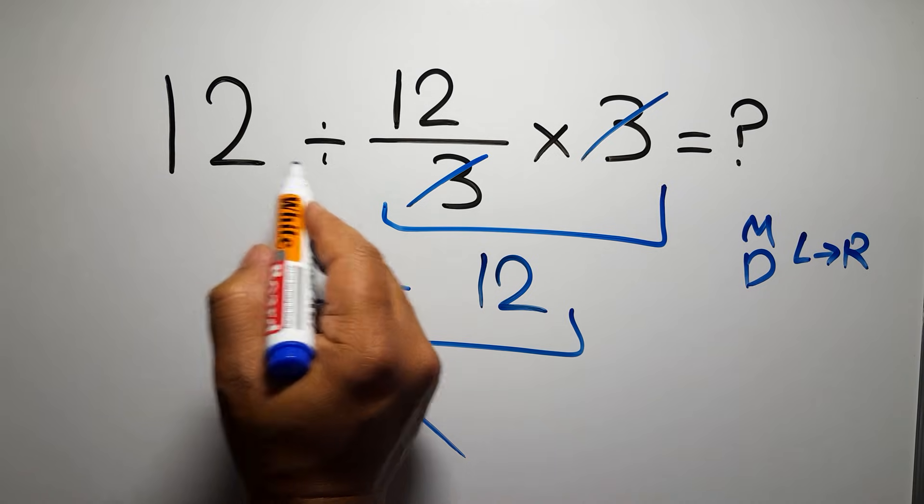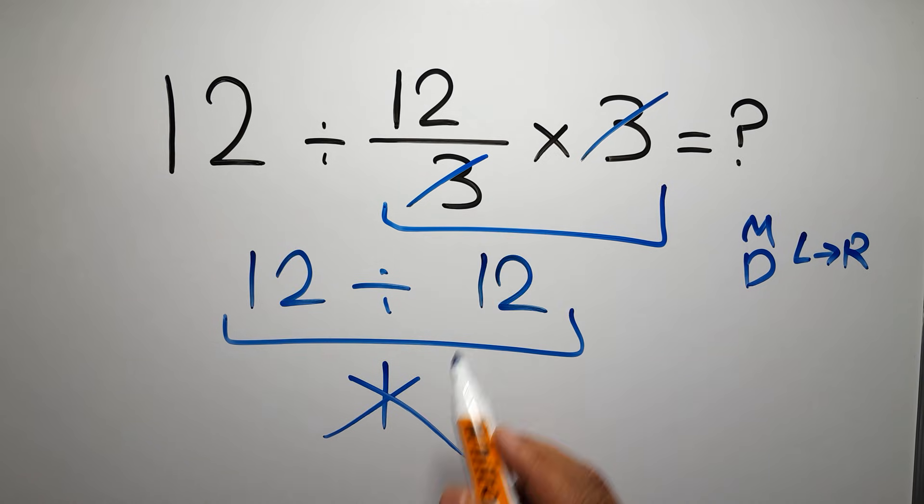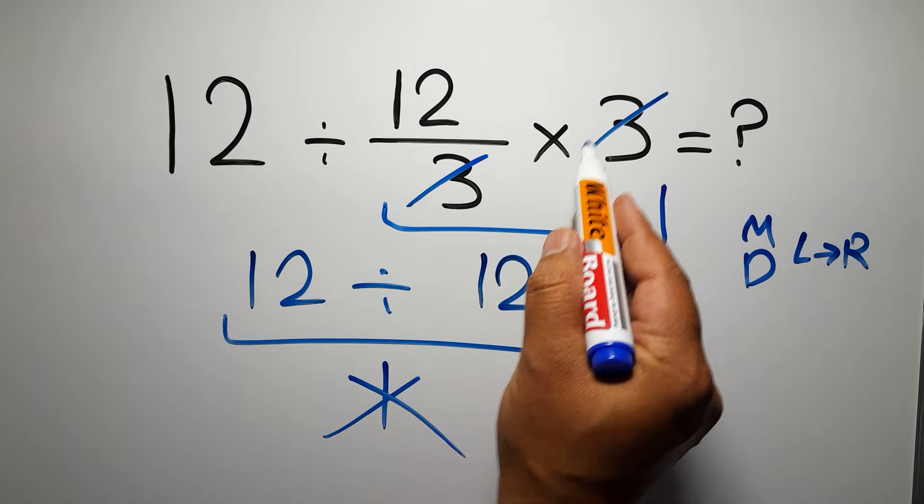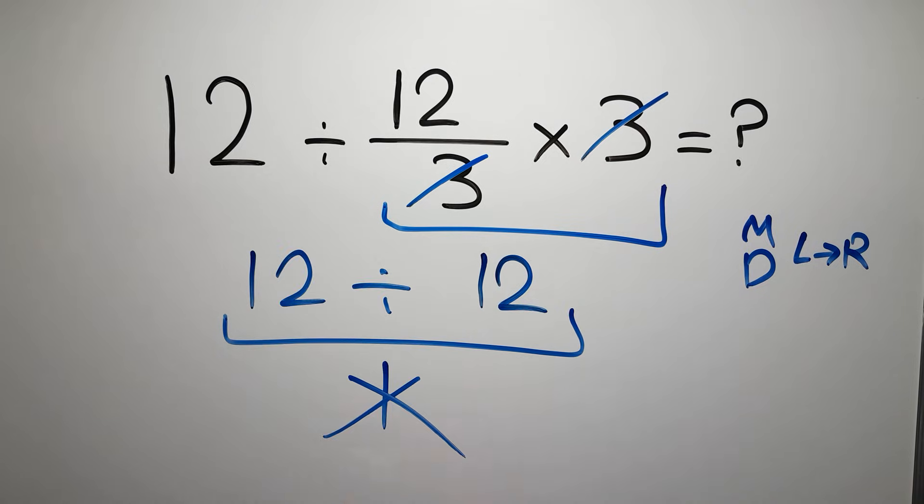So first we have to do this division, not this multiplication. If you do this multiplication before this division, it is wrong.